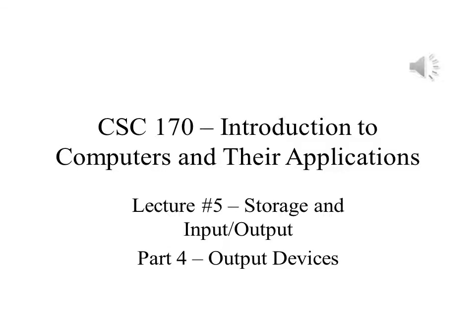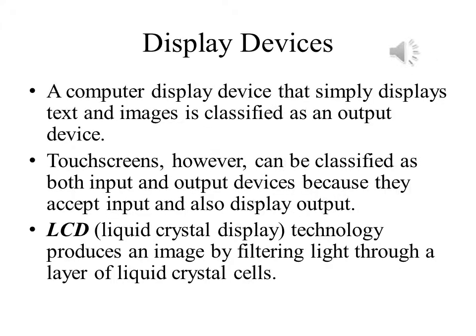In Part 4 of Lecture 5, we will look at output devices. Computer monitors are the single most commonly used output device. The computer displays text for us to read, or pictures, or videos to look at. In this mode of operation, computer monitors are only output devices.